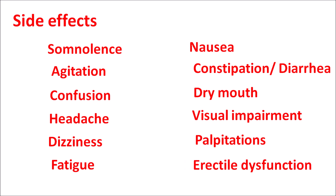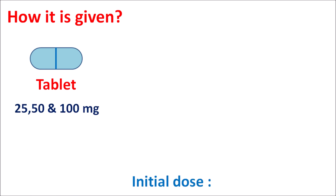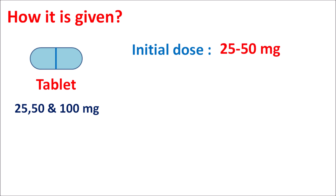In males, sertraline can produce erectile dysfunction resulting in failure of ejaculation. Regarding dosing, this drug is available as tablets at different strengths — 25 mg, 50 mg, and 100 mg. The initial dose is started at a low dose depending on the clinical indication. Since this drug is used as an antidepressant as well as for anxiety disorders, the starting dose may vary from 25 to 50 mg, and the dose can be increased up to a maximum of 100 to 200 mg.